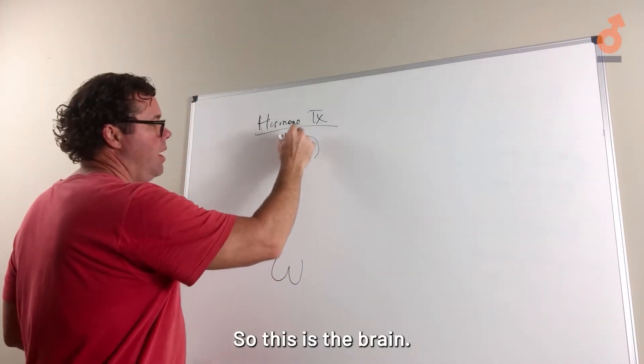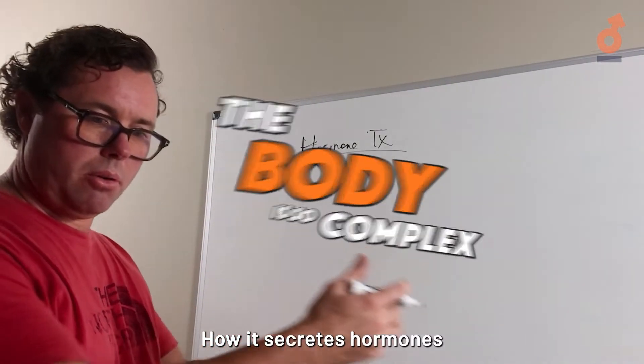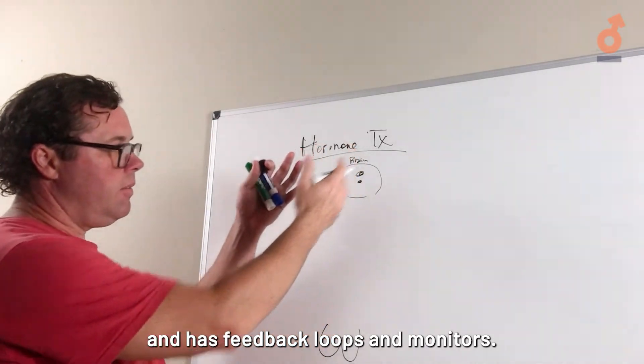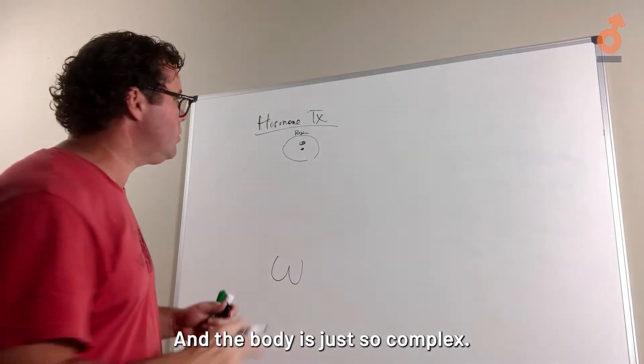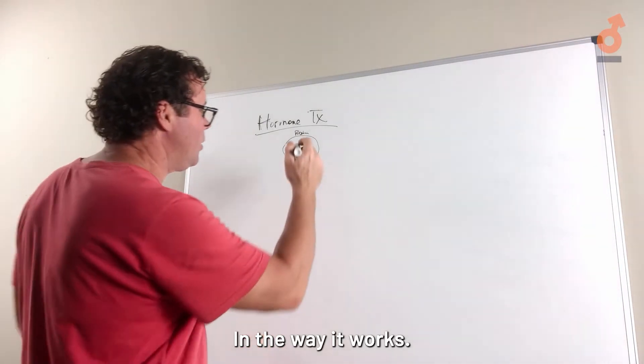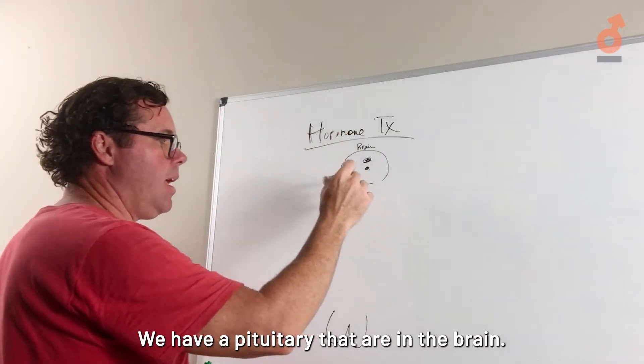This is the brain. The body is so complex in how it secretes hormones, has feedback loops, and monitors what it's doing. We have a hypothalamus and a pituitary that are in the brain